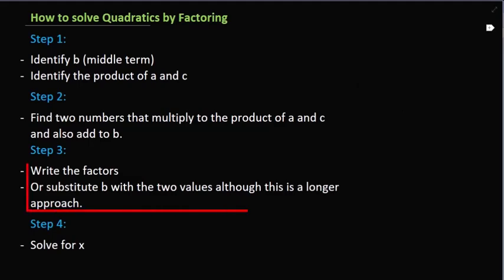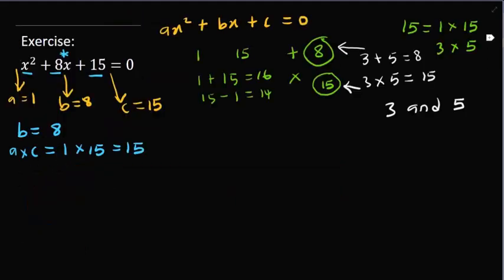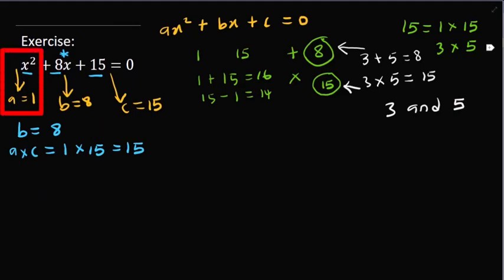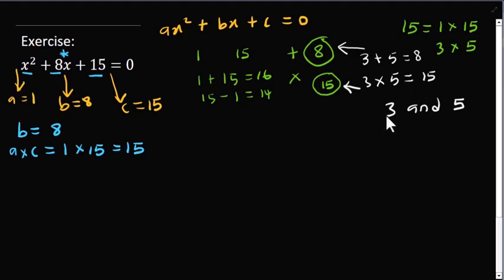Once you find the two values, step 3 says write the factors. For this question, the coefficient of x squared is 1. Whenever the coefficient of x squared is 1, you simply write the factors directly. Whenever the coefficient is above 1 — 2, 3, 4, 5 — you substitute for the middle term, which we will do in the next question. Since the coefficient here is 1 and the two values are 3 and 5, you can write: x plus 3 and x plus 5 equal to 0.